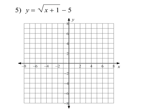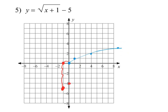This one's a square root graph. The basic one has its vertex at the origin, then goes up 1 right 1, up 1 right 3, and up 1 right 5. For our new function, it's got plus 1 inside, which moves the vertex left 1, and subtract 5, which moves it down 5. So from the new vertex, we go up 1 right 1, up 1 right 3, and up 1 right 5. The blue is the original, the red is the new graph.